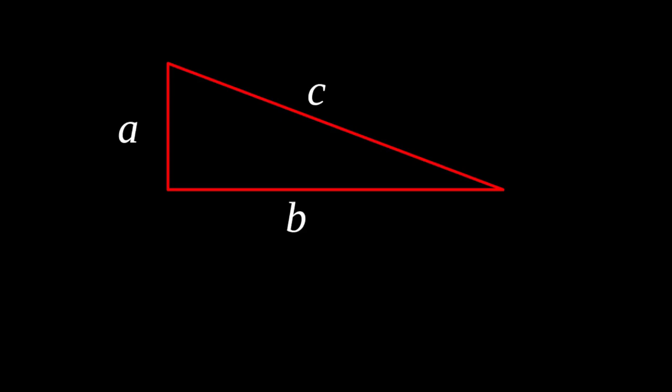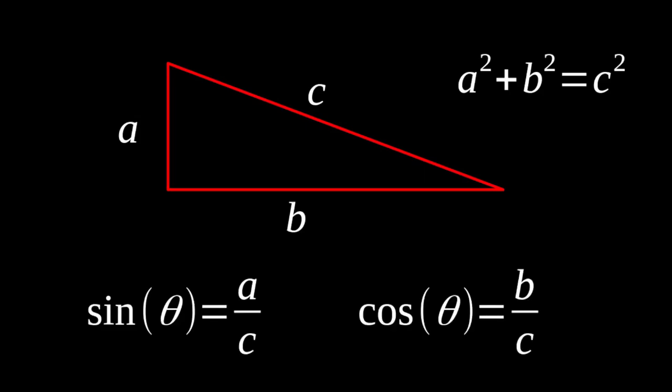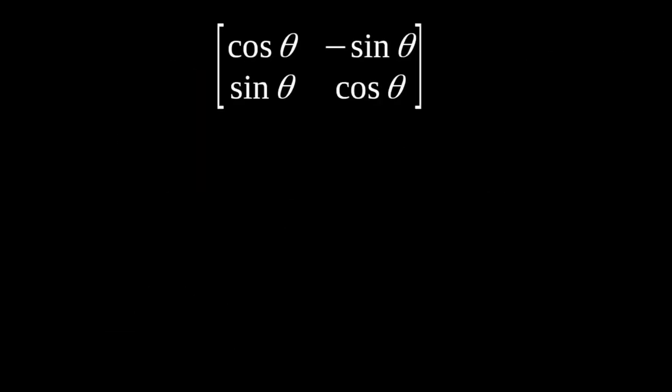But before we can actually use Givens rotations, we need a quick refresher of our trigonometry, because that's going to be the key factor in doing this decomposition with Givens rotations. So here you have a right triangle, A, B, and C right here. You'll recall your Pythagorean theorem, hopefully. A squared plus B squared equals C squared. And then, of course, your relationship for sine and cosine for this right triangle right here. We're going to utilize all of this knowledge right here to perform this decomposition.